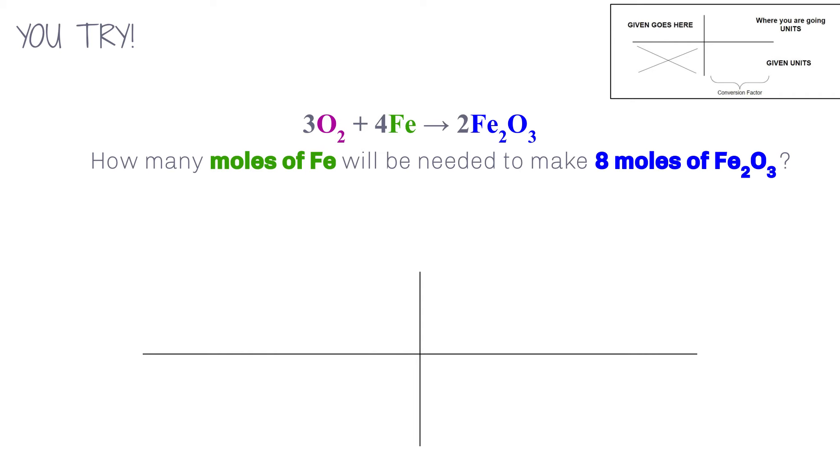You try. How many moles of iron will be needed to make 8 moles of iron 2 oxide? Okay. In order to solve this, so how many moles of iron here are needed to make 8 moles of iron 2 oxide? So what we're starting with is 8 moles Fe2O3. And what we want to find is the moles of Fe. So what's our ratio?